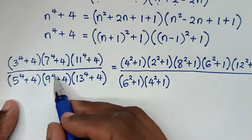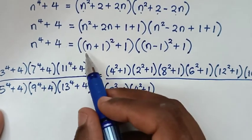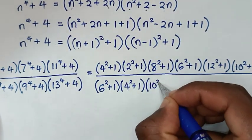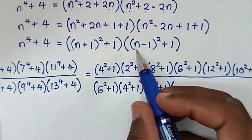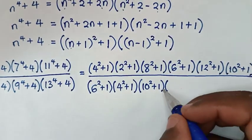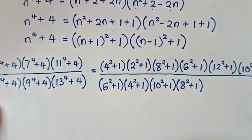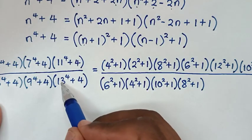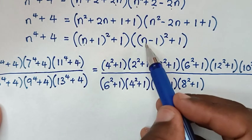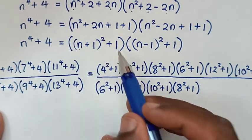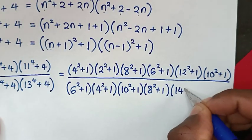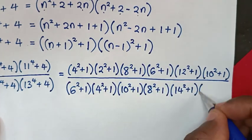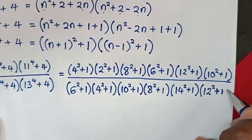For 9 power 4 plus 4, our n is 9, so it becomes 10 squared plus 1, bracket, times 8 squared plus 1, bracket. For 13 power 4 plus 4, our n is 13, so it becomes 14 squared plus 1, bracket, times 12 squared plus 1, bracket.